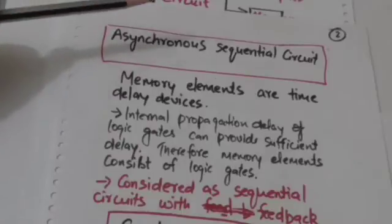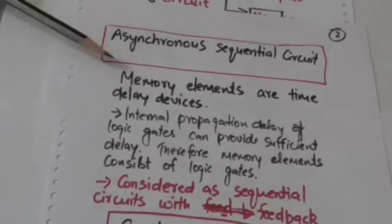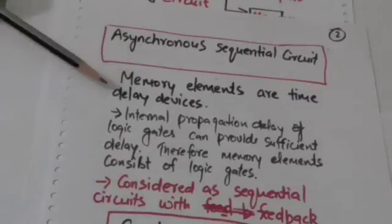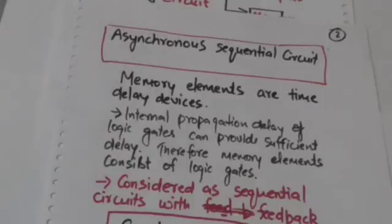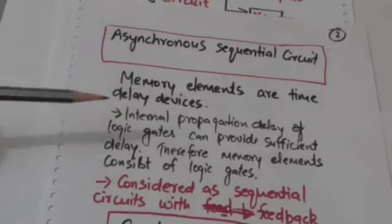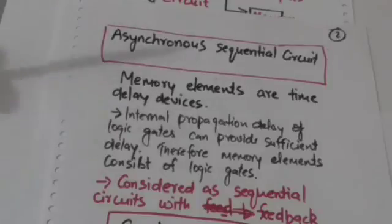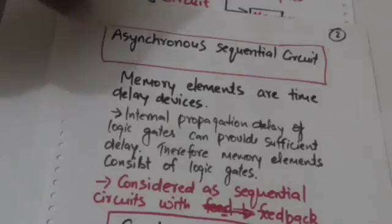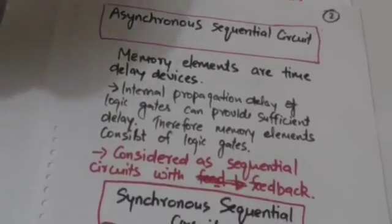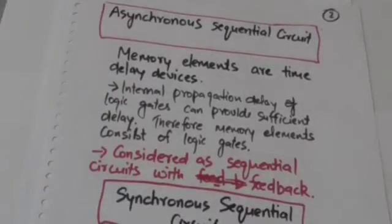In asynchronous sequential circuits, memory elements are time delay devices. Internal propagation delay of logic gates can provide sufficient delay. Therefore, memory elements of asynchronous sequential circuits consist of logic gates. Asynchronous sequential circuits are considered as sequential circuits with feedback.